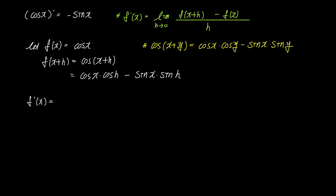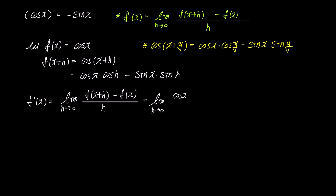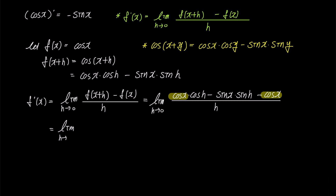Now let's substitute f of x and our expanded f of x plus h into the limit definition of the derivative formula. The numerator becomes cosine x times cosine h minus sine x times sine h minus cosine x. The first and last terms have the common factor of cosine x. Factoring out cosine x, the numerator becomes cosine x times the quantity cosine h minus 1, minus sine x times sine h.